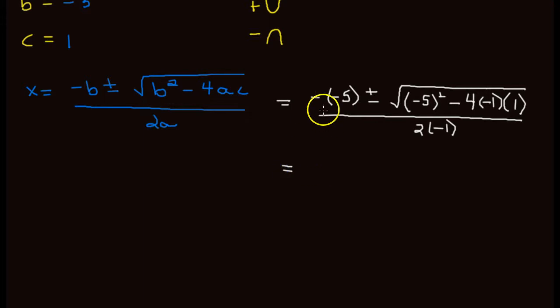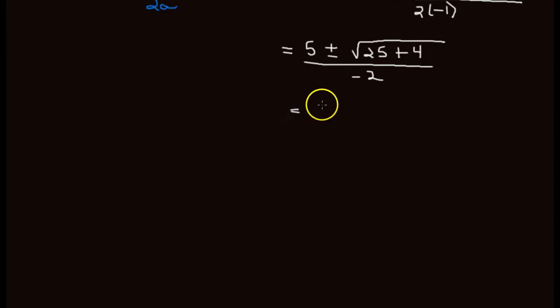So let's move that down a little bit. So now we go ahead and do all the math that's associated with it. So a negative times a negative is a positive. So this becomes positive five plus or minus the square root of negative five squared is 25. And we have negative four times negative one, that's positive four times one is just four. So we have plus four here, all divided by negative two. So we keep going doing our math here and we have five plus or minus the square root of 29 all over negative two.